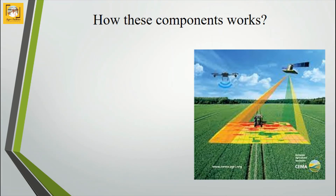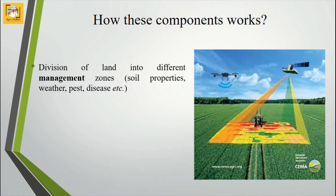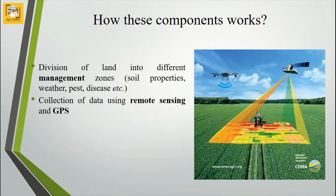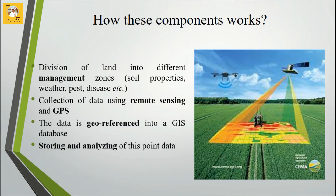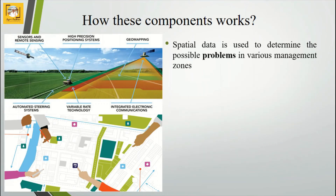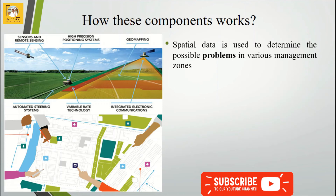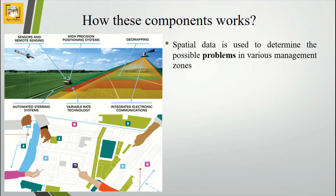Now we will see how GIS is applied in precision farming. First, the land is divided into different management zones based on soil properties, weather, and pest incidence. Data is then collected using remote sensing and GPS, and this data is georeferenced with a GIS database. The data is then stored, analyzed, and converted from point data into spatial data.